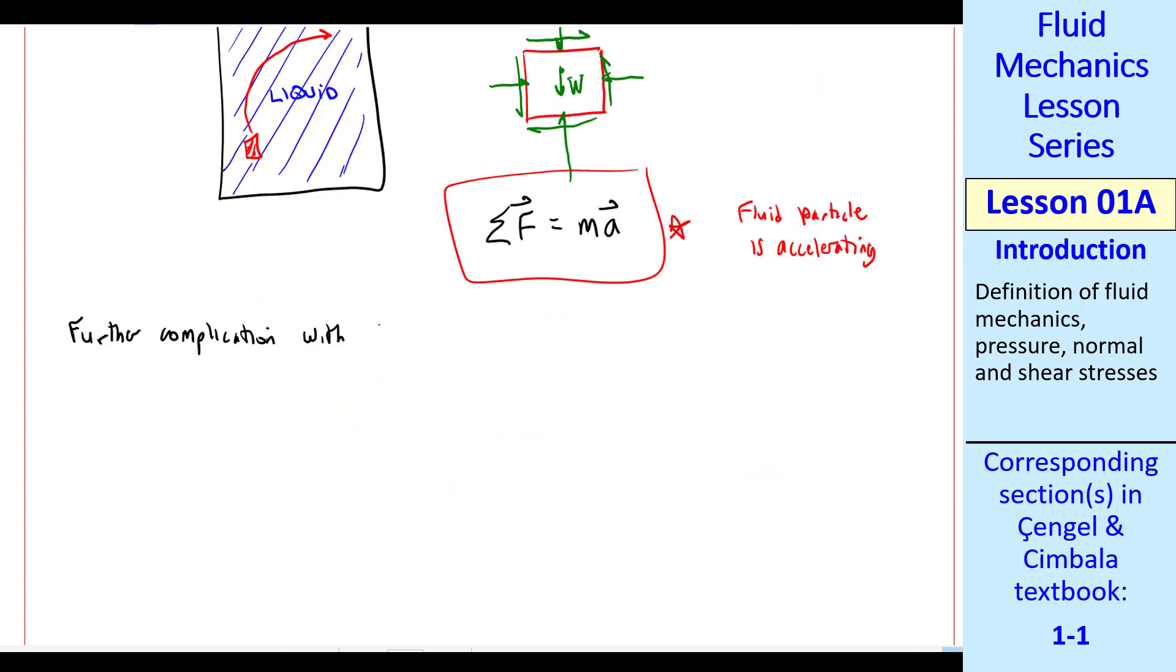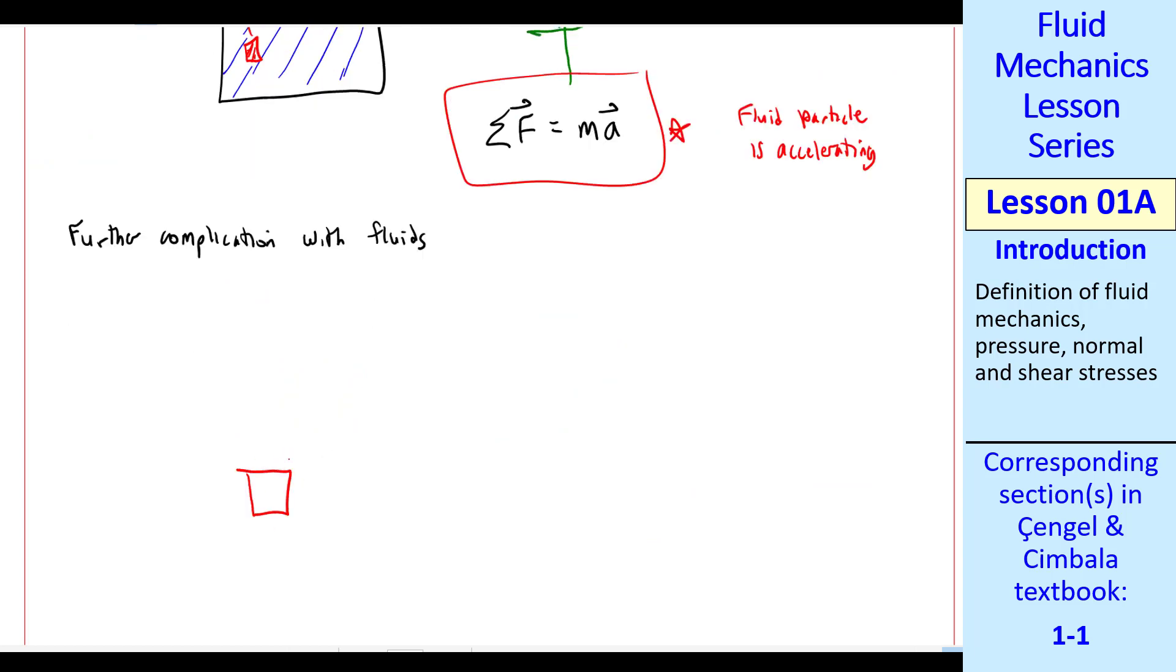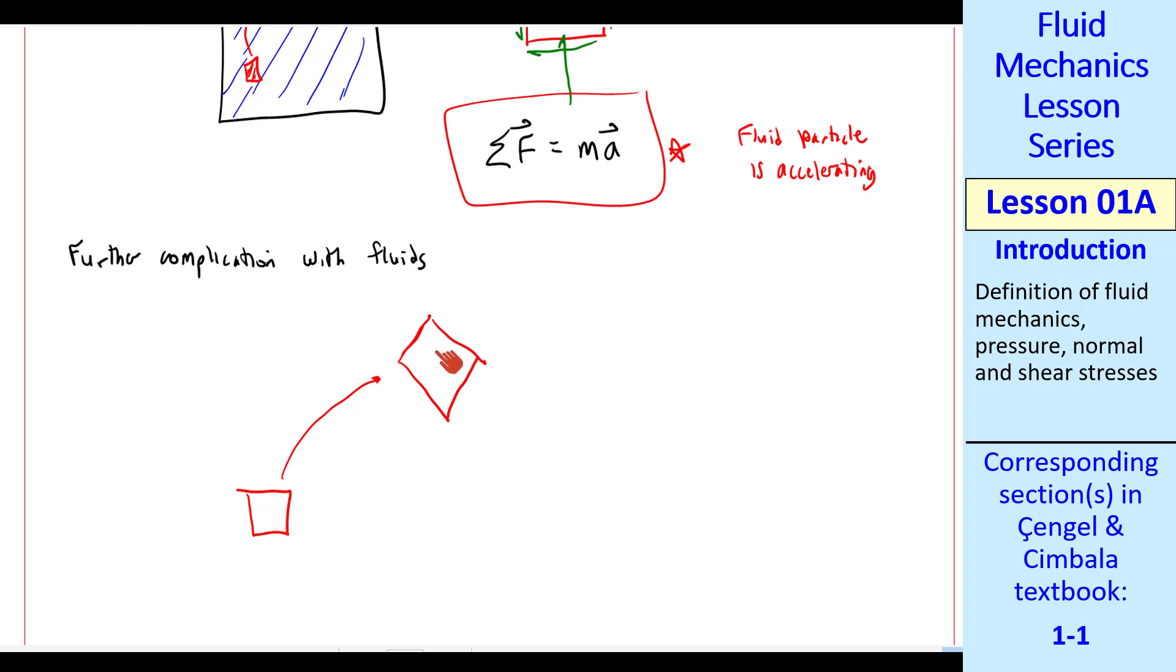There's a further complication with fluids compared to solids, and that is that as this fluid particle moves, it also distorts. As sketched here, it doesn't remain a rectangle, but it changes to some other shape. And as it keeps moving, it will keep distorting to some new shape.